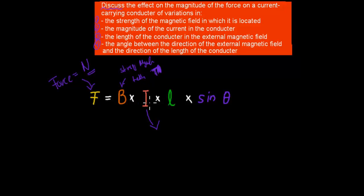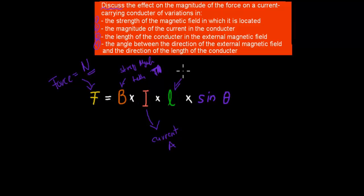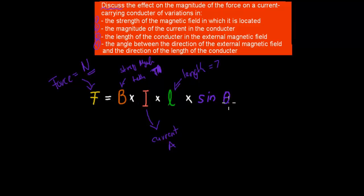We have I as our current, and current is measured in amps. We have L as our length, and that's measured in meters. And then we have sine theta — that's just the angle component of the formula.